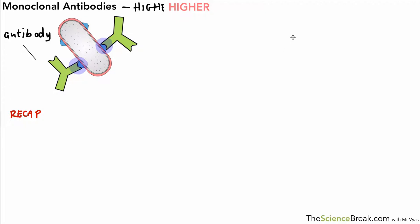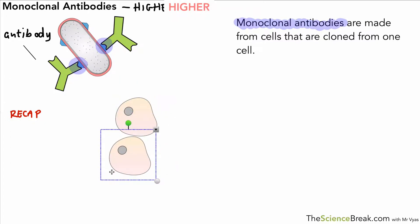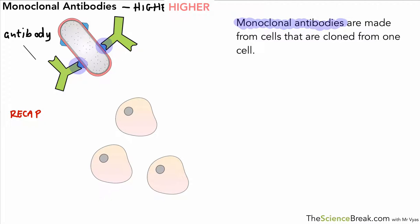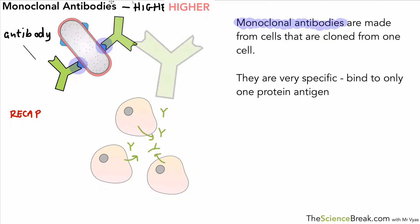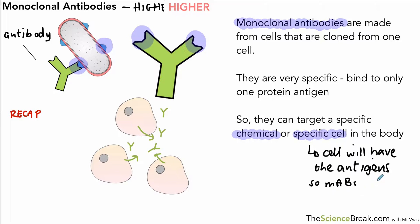These antibodies are very specific for specific antigens. Monoclonal antibodies are antibodies made from cells that are cloned from one particular cell. So if we take one white blood cell and clone it, all of the individuals from that clone will produce a single and specific type of antibody. That antibody has a very specific shape, so it will only bind to one particular protein antigen — meaning we can target a specific chemical or a specific cell in the body.